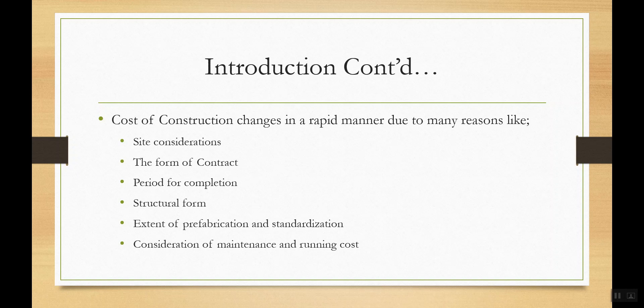Consideration of maintenance and running cost is key — this is what life cycle costing is about. Earlier, we only thought about the initial construction cost. Nowadays, even when constructing your own house, you think about energy consumption, maintenance cost, replacement, and whether you can go for energy-saving methods even if the initial cost is high. New trends open up new areas of comparison, and we need to think about those things.